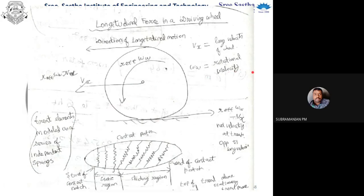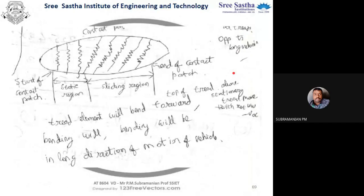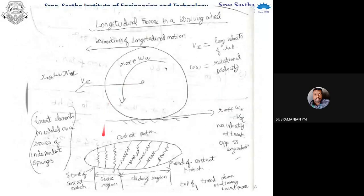We will be discussing longitudinal force in a driving wheel. Some topics from the second unit will be repeated again. For a wheel, from the engine we get power, which is transmitted as rotational speed — r omega — and that rotational speed is transferred as a linear speed, vx. The difference between linear speed and rotational speed is slip.